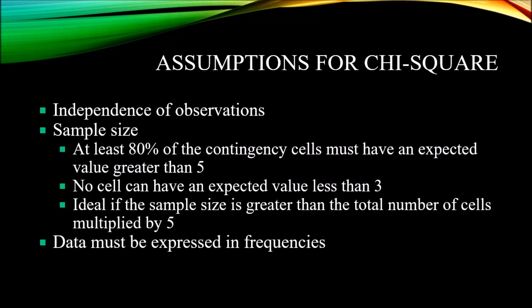In addition to that rule, no cell can have an expected value less than 3. When working with chi-square, it's ideal if we can get a sample size that is greater than the total number of cells multiplied by 5. In that first example, that 3 by 2 contingency table with 6 cells multiplied by 5, we'd want a sample size greater than 30.